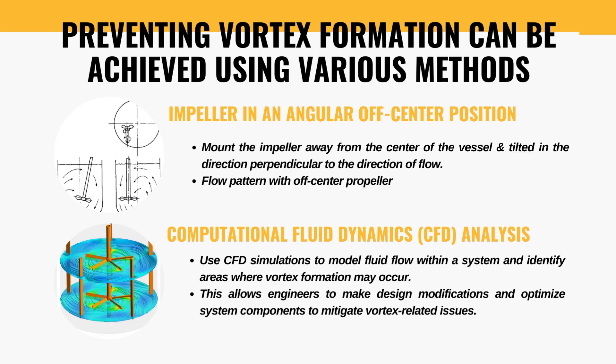So those were some of the ways to prevent vortex formation. That's all for this video, where we discussed the dynamics of swirling flow and six ways to prevent vortex formation: the use of flow straighteners, use of baffles, adjusting fluid velocity, use of swirl breakers, offsetting the position of the impeller, and computational fluid dynamics analysis. Hope you liked this video. For more informative videos related to chemical engineering, process engineering, chemical safety, and industrial safety, subscribe to this channel and feel free to leave any questions or comments below. Thanks for watching and see you in the next video.